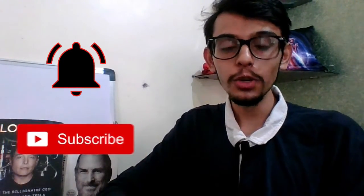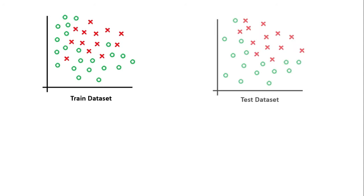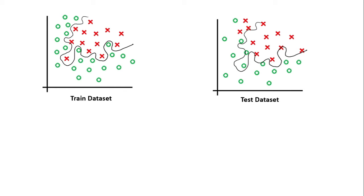Without further ado, let's get started. Let's look at what is overfitting. Let's say we have this as our training data set and this as our test data set. After training the model for a certain time, the decision boundary fits so well to this data set that it captures almost all the points in it. If we try to make predictions on the test data set with this model, it will not perform well, and thus we will have high train accuracy but low test accuracy.